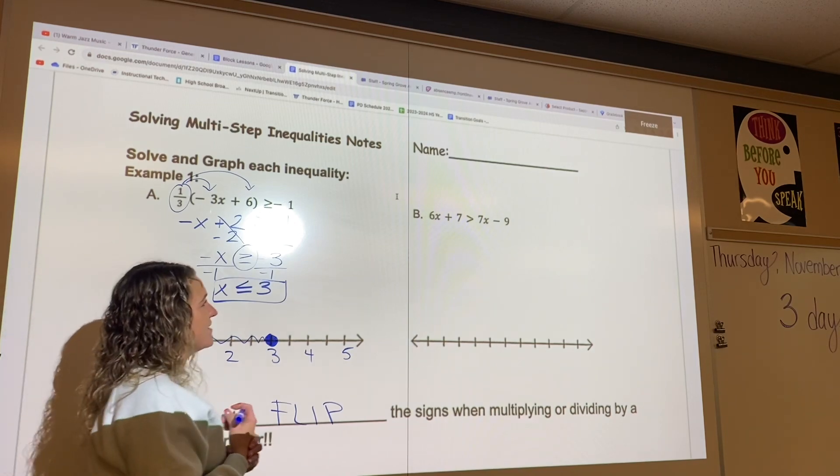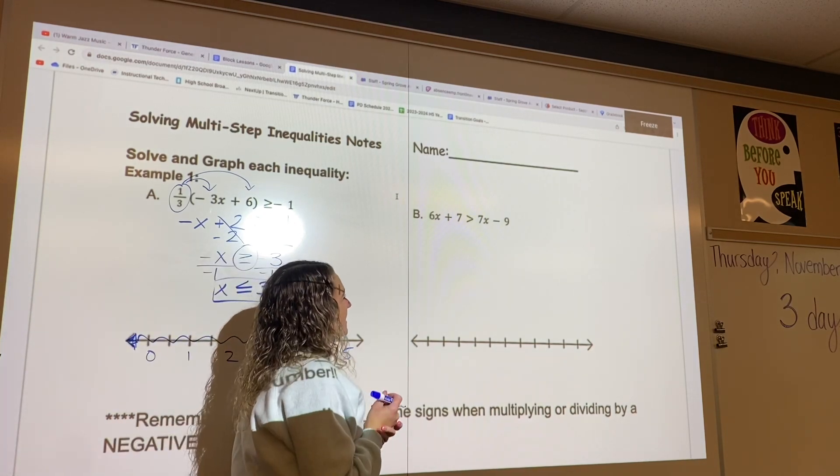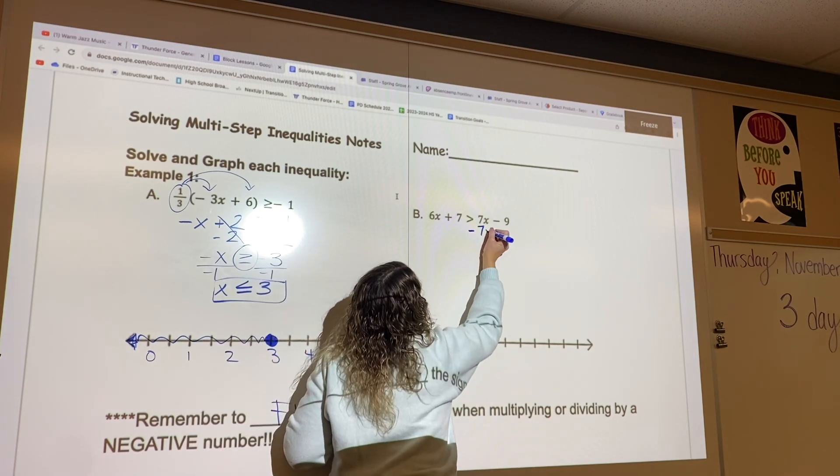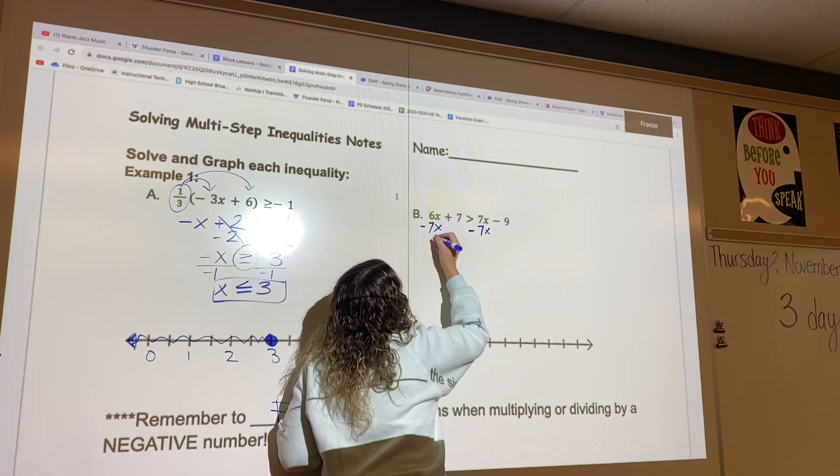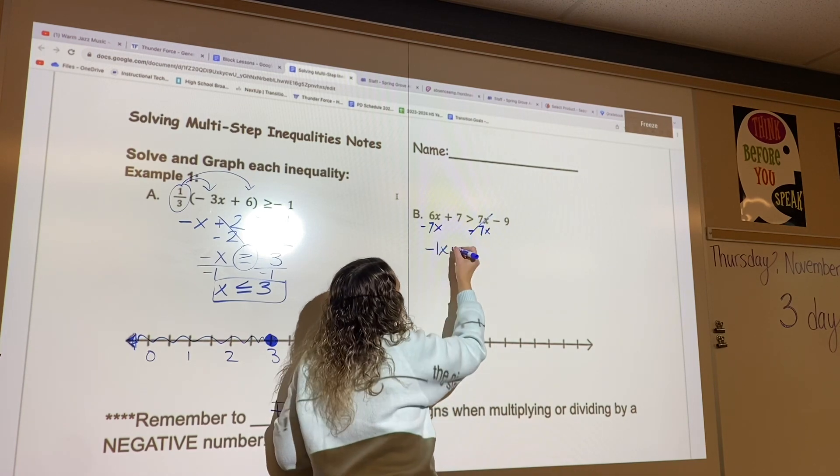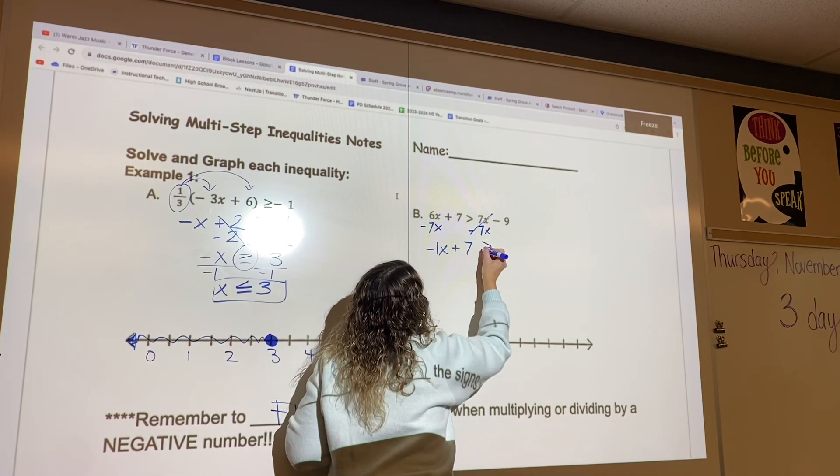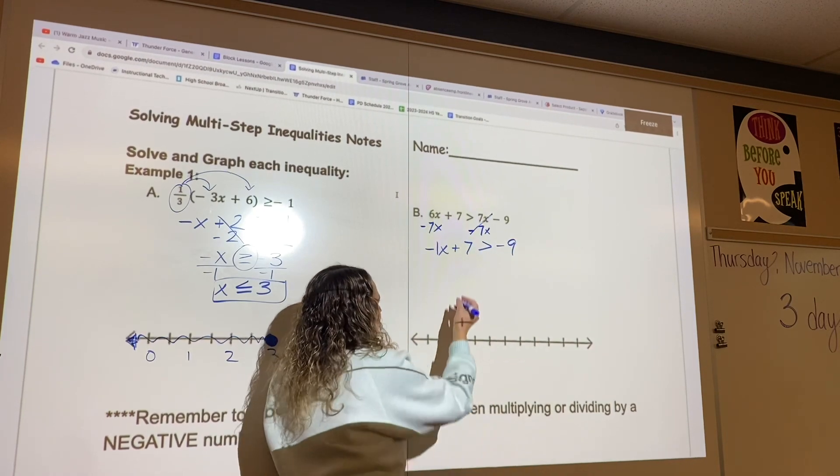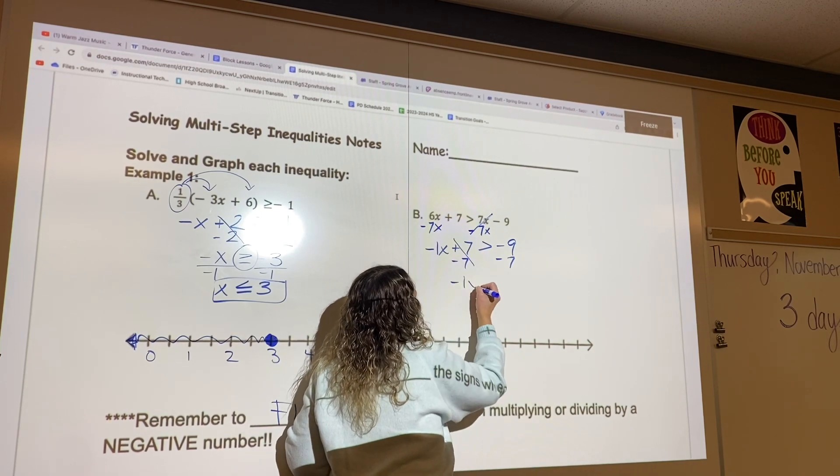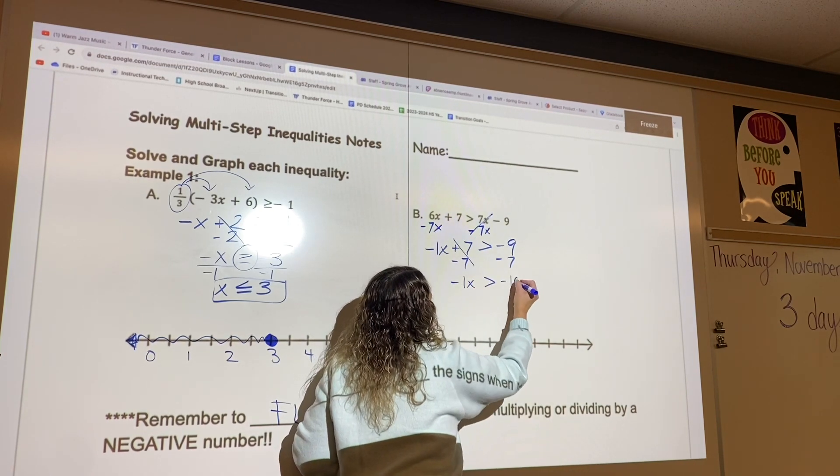Let's take a look at letter B. The first step I'm going to take is to move my x's to the left. So I'm going to get rid of my 7x by subtracting on both sides. That's going to leave me with negative 1x, or just negative x again, plus 7 is greater than negative 9. Now let me get rid of the 7 by subtracting. So I have negative 1x is greater than negative 16.